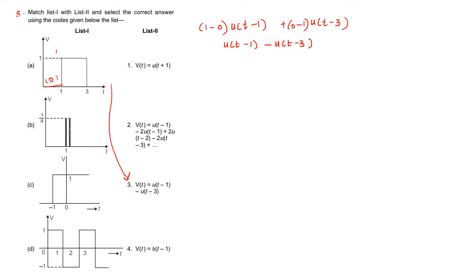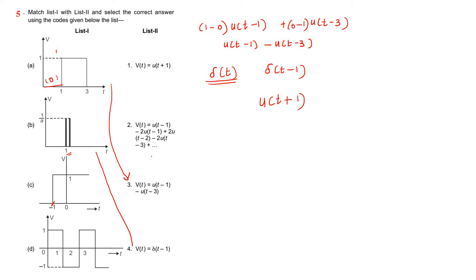Next, this is the impulse signal. For this impulse signal, how to write this? It is a delayed impulse signal — the impulse signal is del of t delayed by 1 unit. So, del of t minus 1. For B, the fourth one is correct. Next, consider C — this is also a unit step signal. The point where the signal changes occur is only one point. That is the advanced signal u of t plus 1. Final amplitude is 1, initial is 0, so 1 minus 0 — u of t plus 1 is the correct answer. So C equals 1.